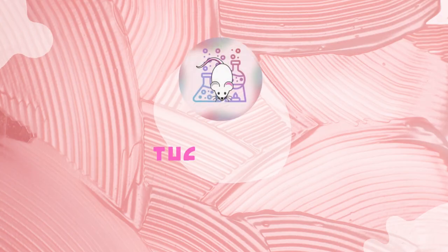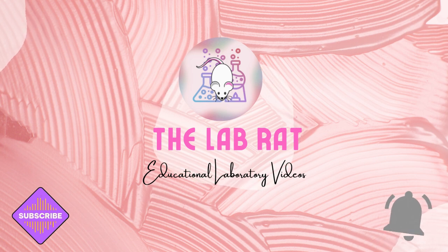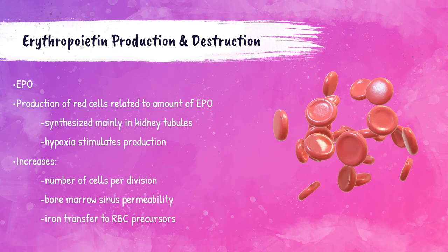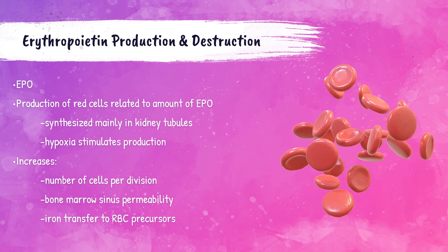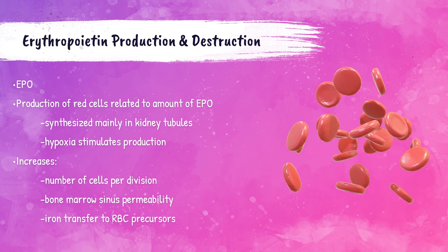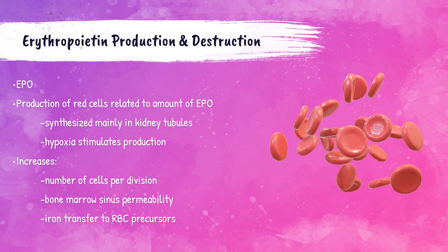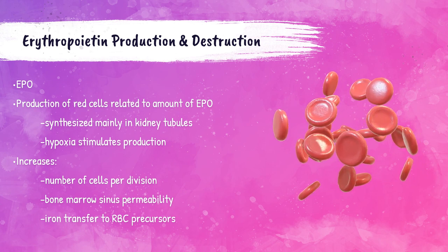Let's get started! So let's talk about the production of red blood cells — how they're made. The term erythropoiesis is important to know within this lecture. Erythropoiesis is the production of erythrocytes, and we already know that erythrocytes is a fancy term for red blood cells.